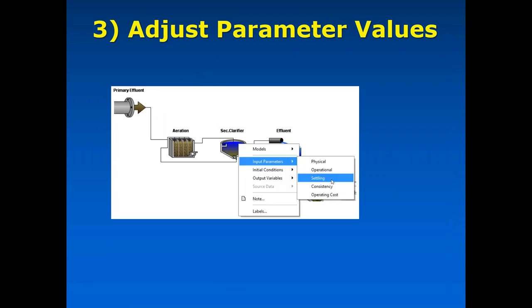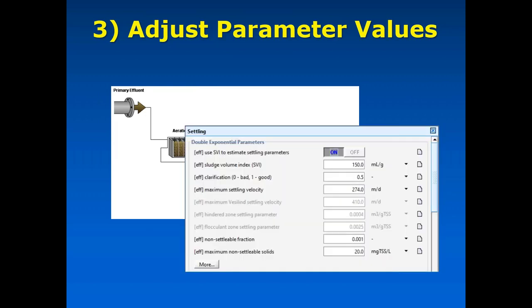For settling parameters, they are accessible from the settling menu. I typically work with our SVI correlation turned on so I can deal with two parameters: the SVI and the clarification parameter. I'm going to show those in more detail in the desktop demonstration shortly.